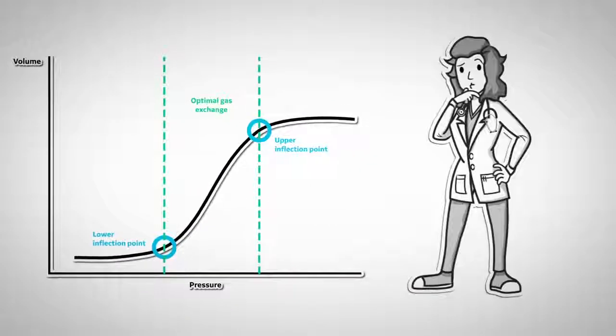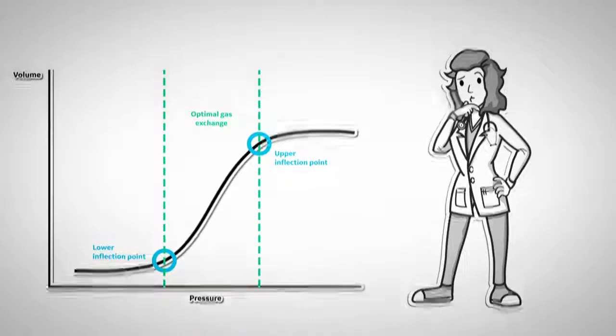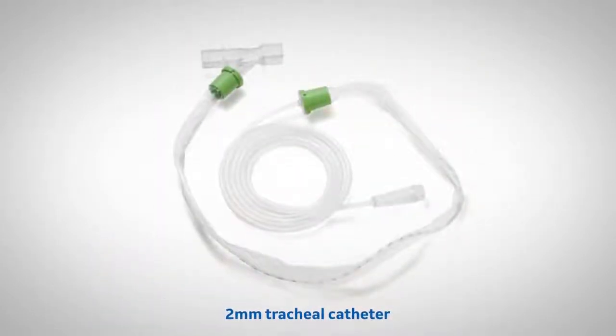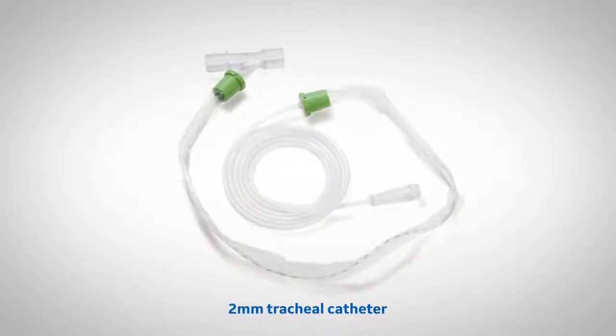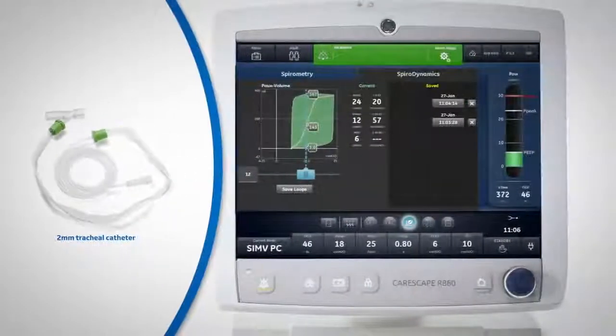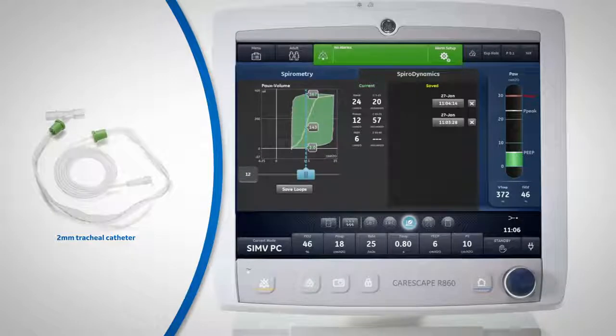Sometimes it can be difficult to visualize the upper and lower inflection points using the pressure-volume loop. The CareScape R860 offers measurements on tracheal pressures and intrinsic PEEP via a small 2mm tracheal catheter and the use of the SpiroDynamics clinical decision support tool.